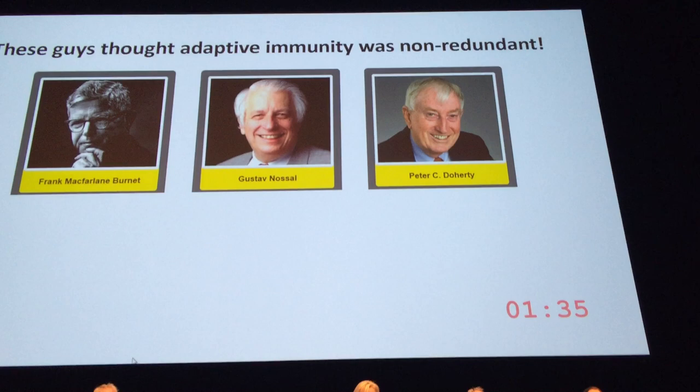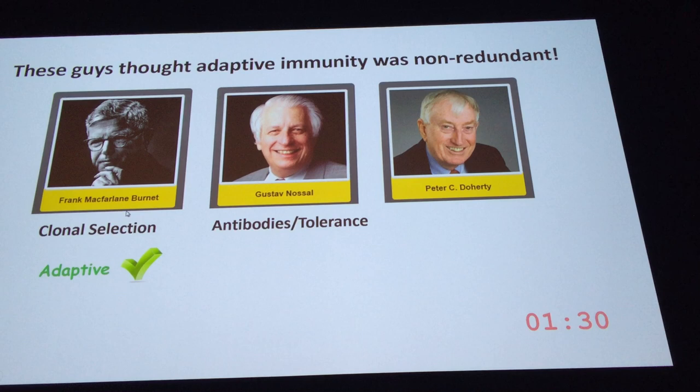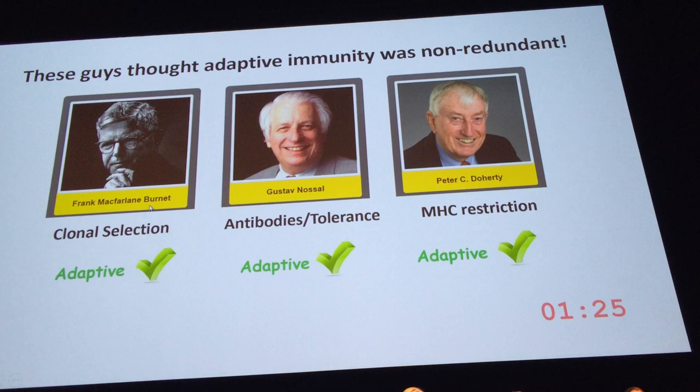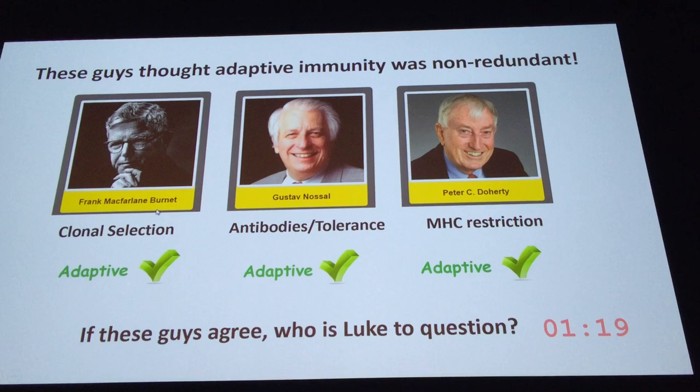These guys thought adaptive immunity was pretty good: Burnet — clonal selection, adaptive; Nossal — adaptive tolerance, adaptive; Peter Doherty — MHC restriction, adaptive. So I leave it to you: if these guys agree, who is Luke to question? Now you'll hear the way they're going to distort the truth, and I'll turn it over to the next group.